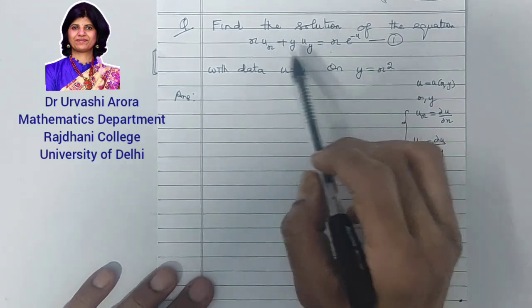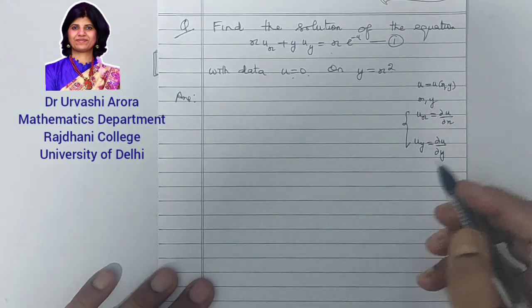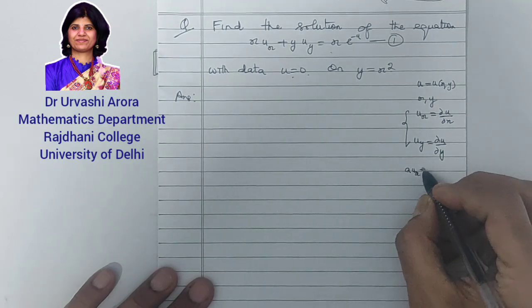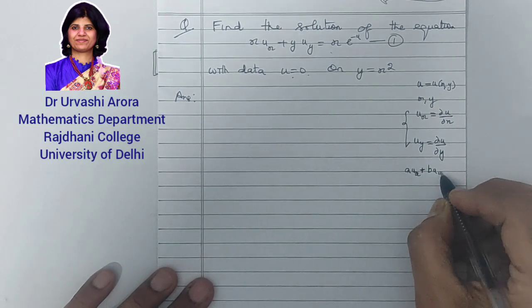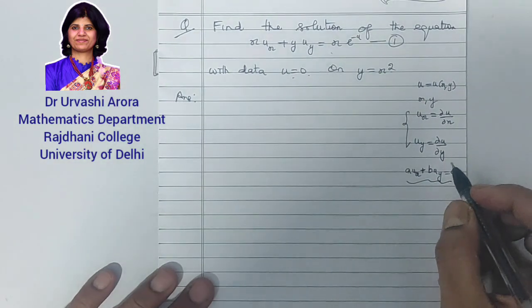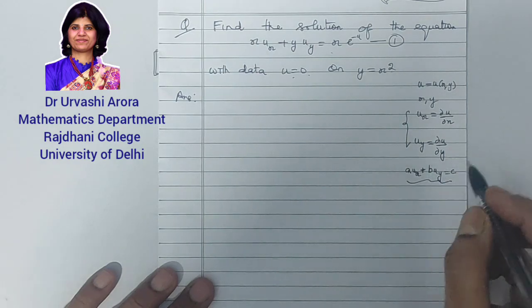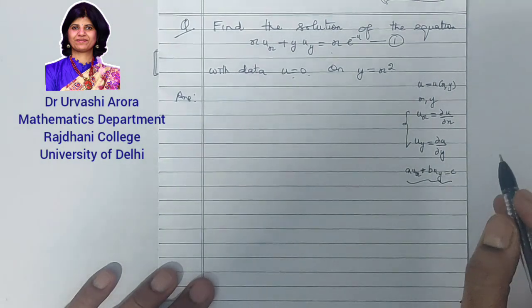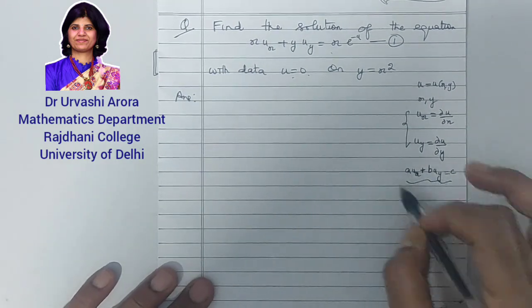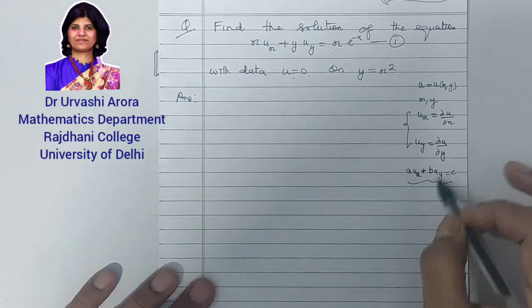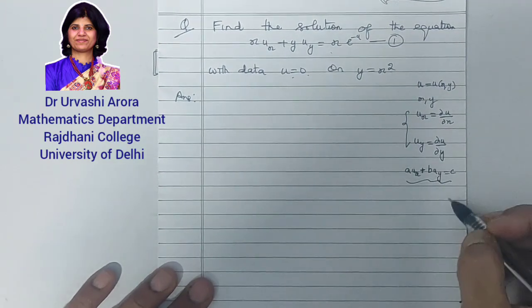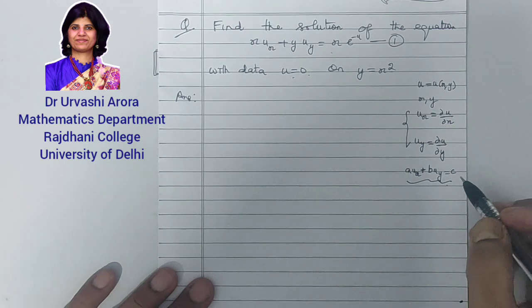This is a quasi-linear partial differential equation of first order because a general quasi-linear first order PDE looks like: a·u_x + b·u_y = c. This general form I have already considered in my earlier videos when discussing different types of partial differential equations, the Cauchy problem, and Lagrange's method for solving this type of equation.